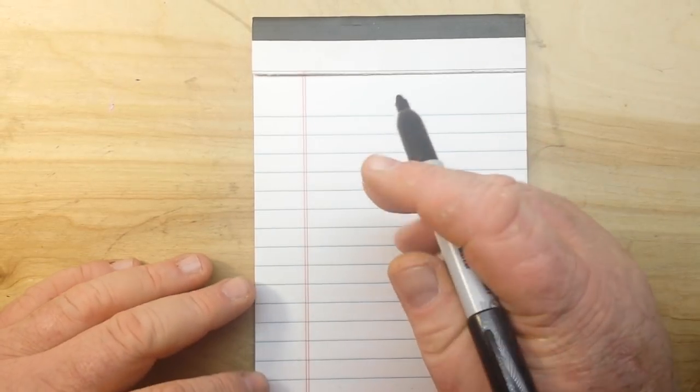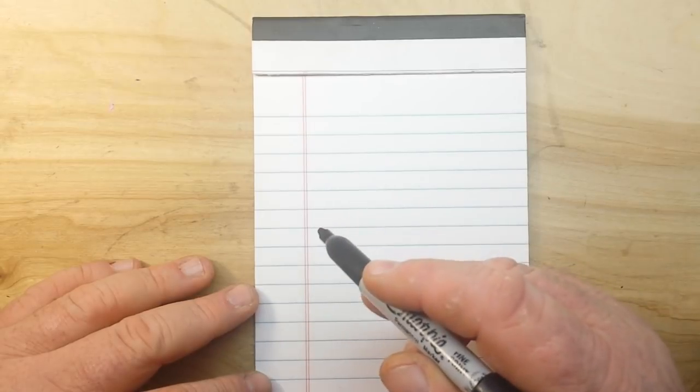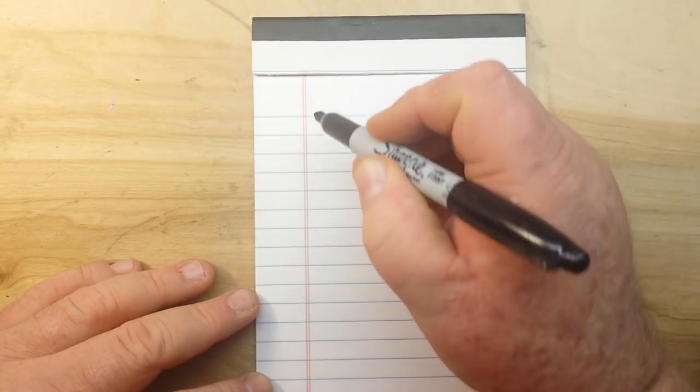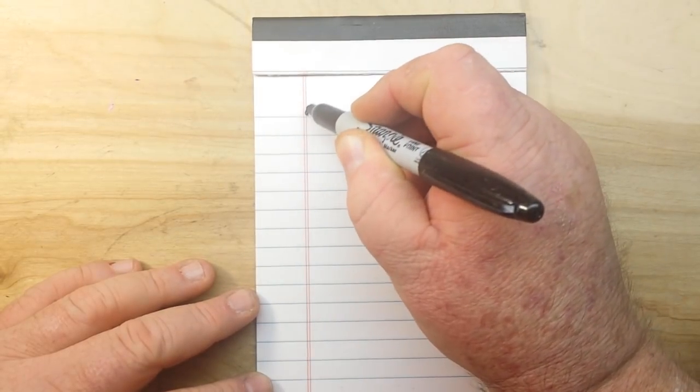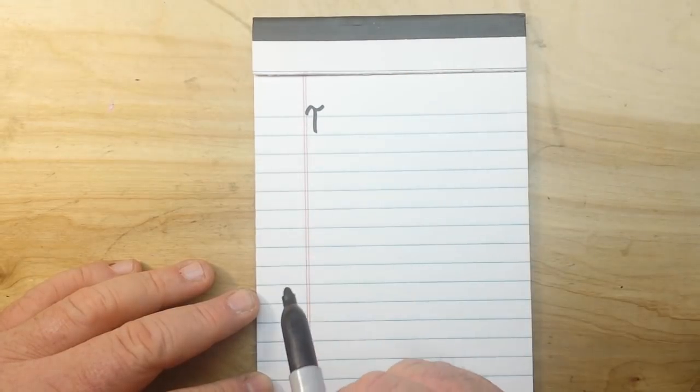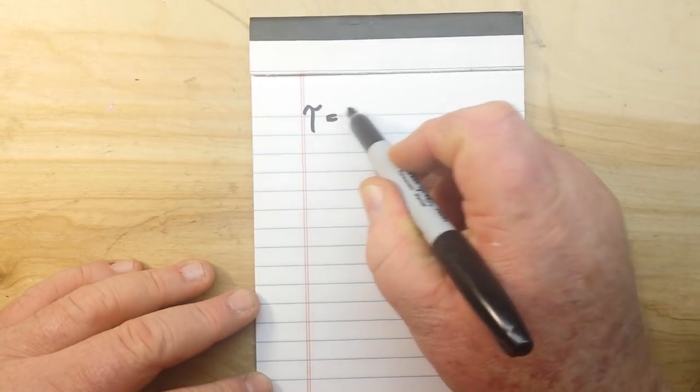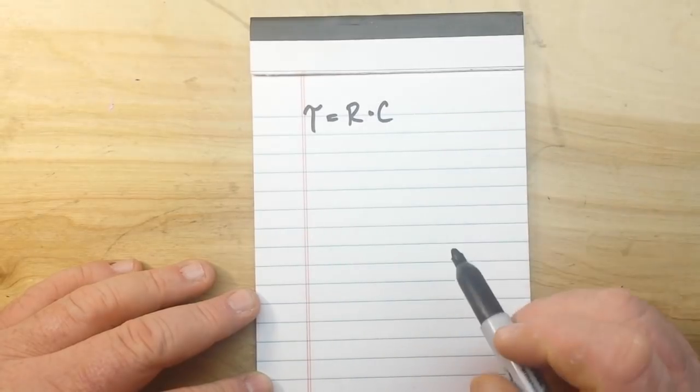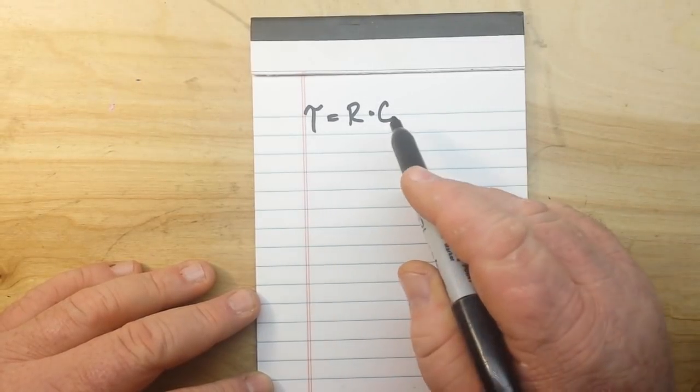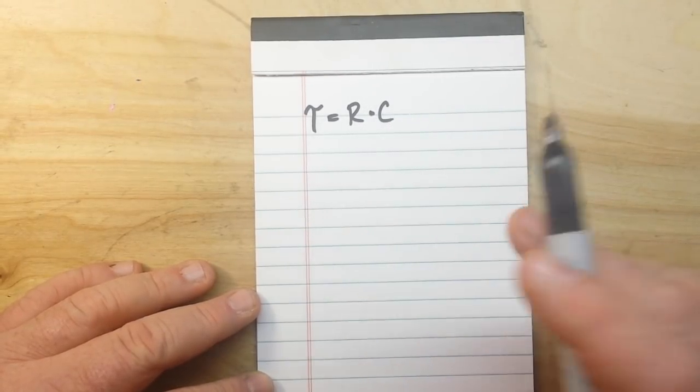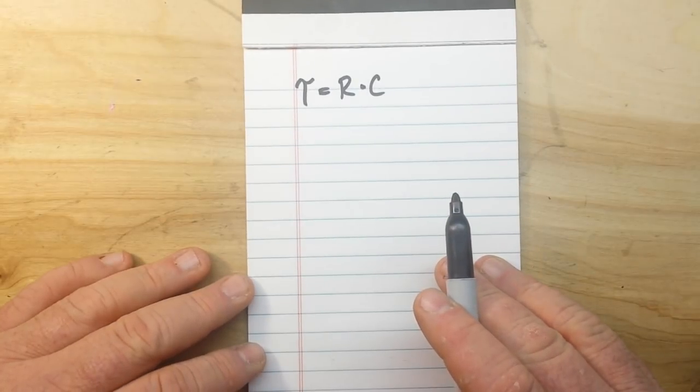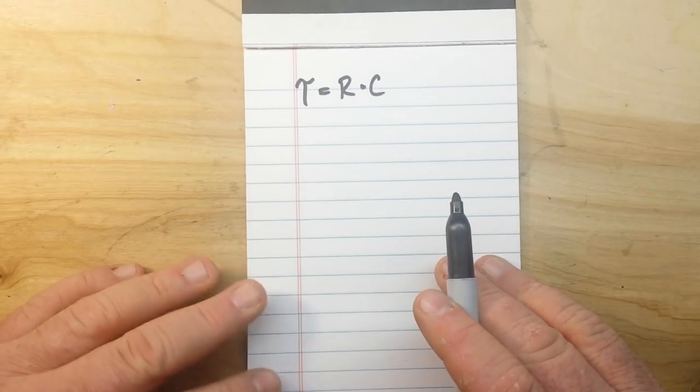You guys all know what the RC circuit is, right? It's a circuit that uses a resistor and a capacitor and we use that for timing. We call it tau and it is equal to RC or the product of the resistance times the capacitance.